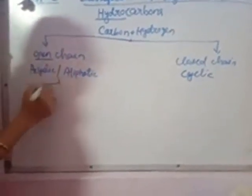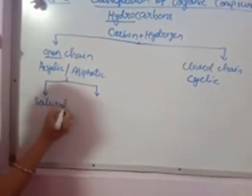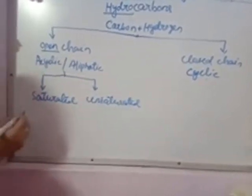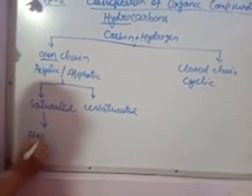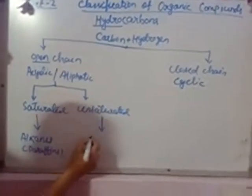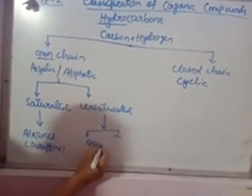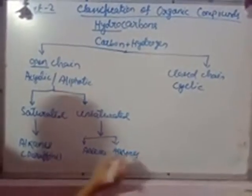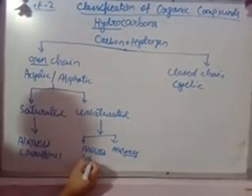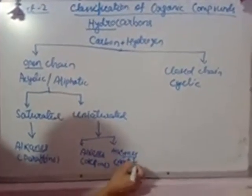Open chain compounds can be divided into two parts: one is saturated, another one is unsaturated. Saturated compounds are called alkanes, also known as paraffins. Unsaturated compounds are again two types: alkenes, also known as olefins, and alkynes, also known as acetylenes. The suffixes are -ane, -ene, and -yne respectively.